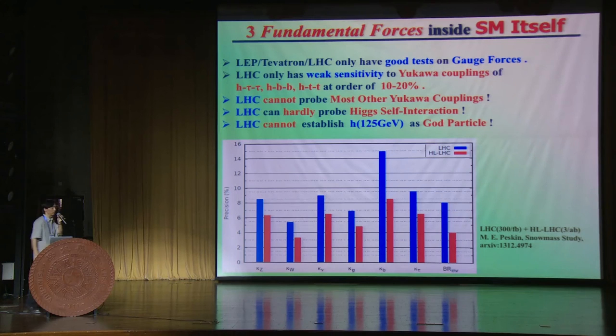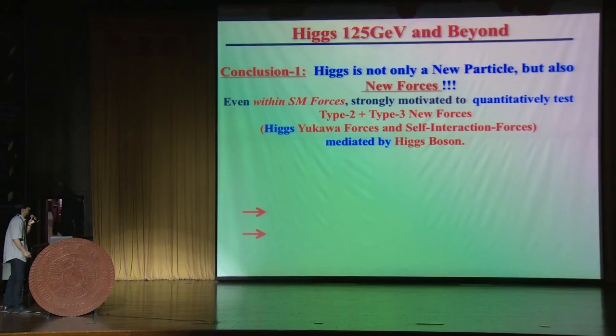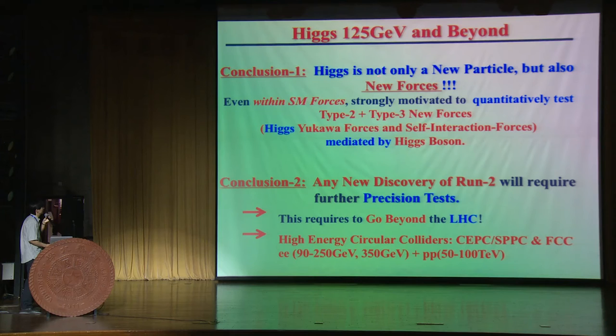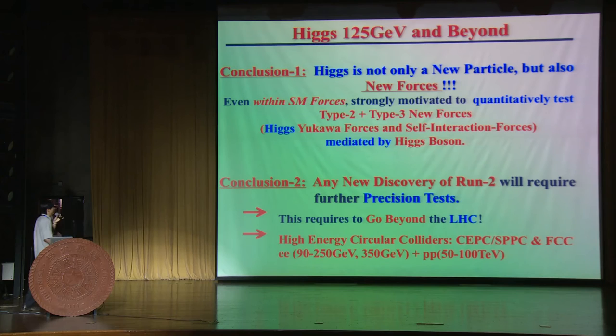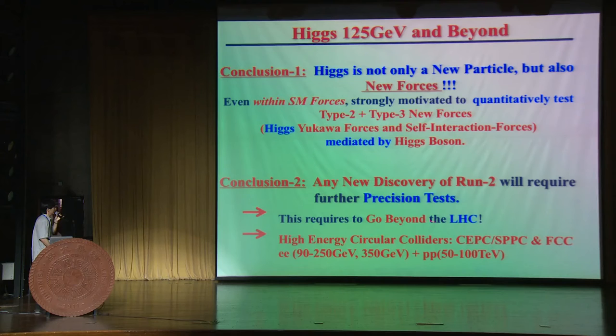The LHC has no sensitivity to all the other Yukawa couplings and can hardly probe the Higgs self-coupling. Therefore, the LHC cannot establish the Higgs boson as the particle that gives masses to everyone. Any new discovery at Run 2 will certainly require further precision tests, given the limited precision of the LHC as a hadron collider with only 13 TeV. This strongly motivates going beyond the LHC.